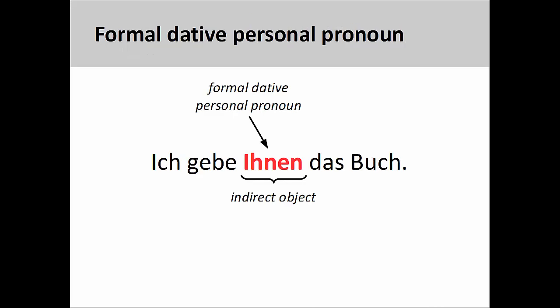Finally, the sentence ich gebe Ihnen das Buch — I give the book to you — looks a lot like the sentence we saw earlier. Note, however, that the first letter in Ihnen is capitalized. This means that Ihnen is a formal dative personal pronoun and the person I am addressing is a stranger, a business associate, or somebody I just met — in other words, a person I would want to show respect to.